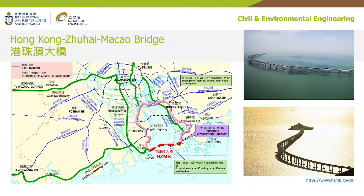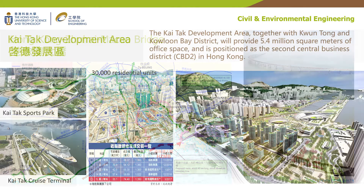How many of you have been to the Hong Kong–Zhuhai–Macao Bridge? It greatly reduces the travel time from Hong Kong to Macau and Zhuhai. If you have been to the bridge, you will be amazed by what civil engineers built. The Kai Tak development area, together with Kwun Tong and Kowloon Bay District, will provide 5.4 million square meters of office space and is positioned as the second central business district, CBD2, in Hong Kong, along with many residential flats.